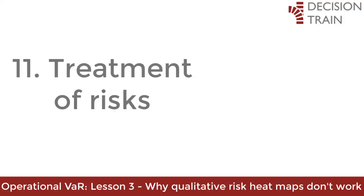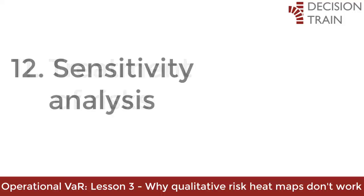Suppose a risk analyst using heatmaps is actually suggesting multiple alternative mitigation options — how does the heatmap help make a decision about which is the best option? You can't do it. Quantitative risk management provides clear guidance on what costs are or are not justified. With heatmaps, you can only do a few basic what-if scenarios to see if we should focus on reducing probability or impact.